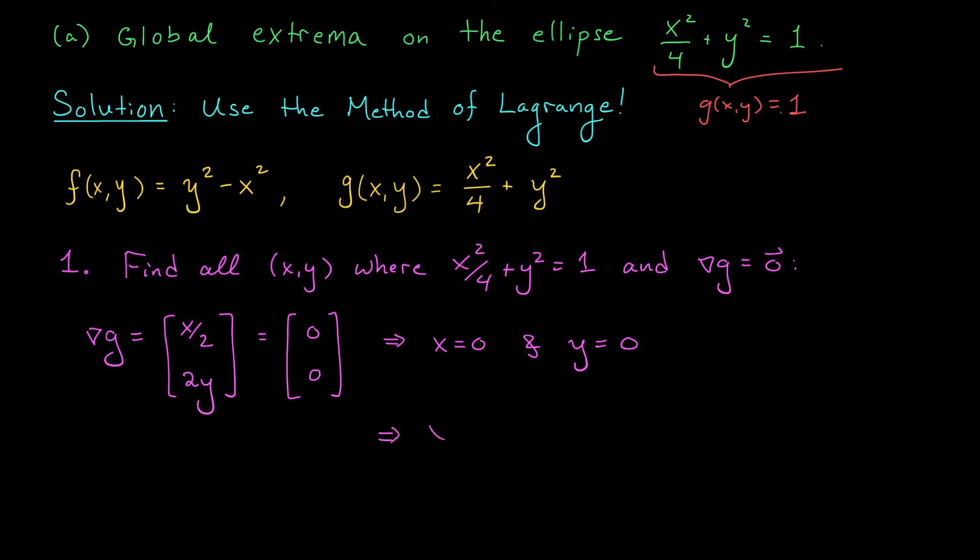is really 0 squared over 4 plus 0 squared. It has a value of 0, not 1, but in order for our point to lie on the constraint curve, this expression must have a value of 1. So what do we conclude? There's no point on our constraint curve where the gradient of g is equal to 0.